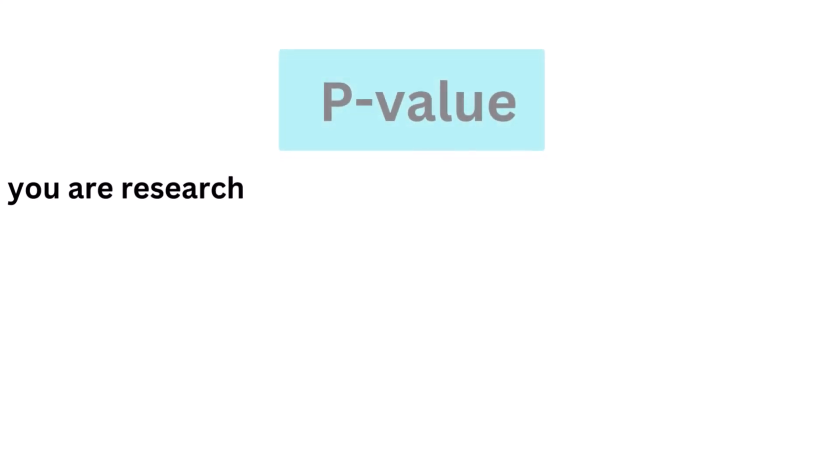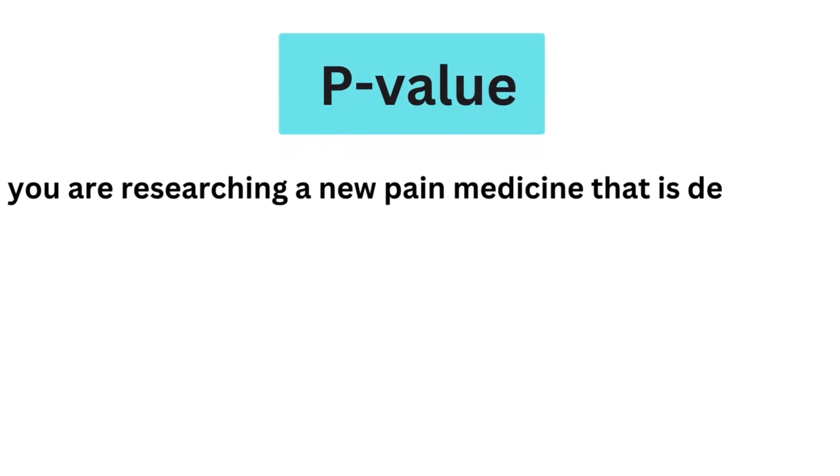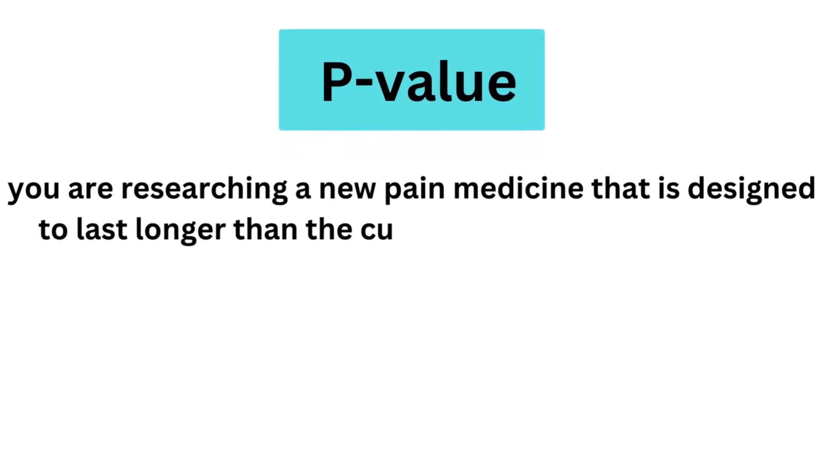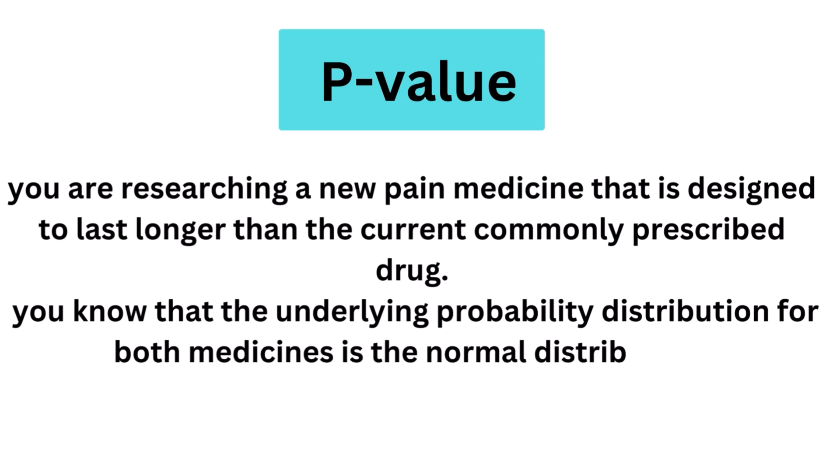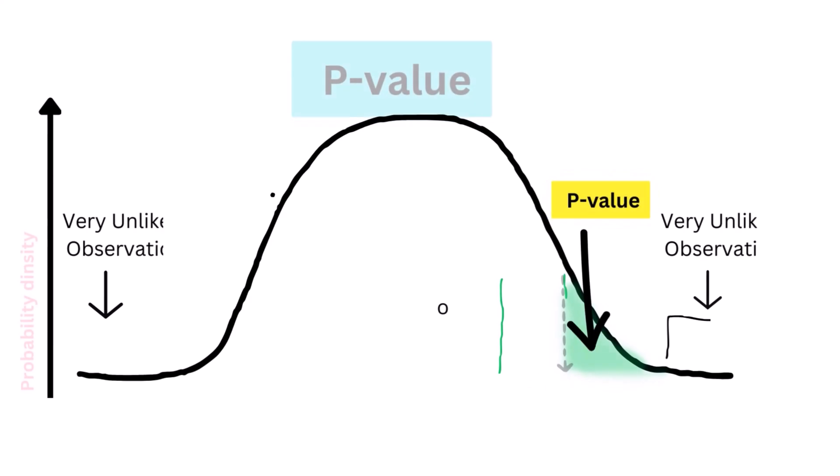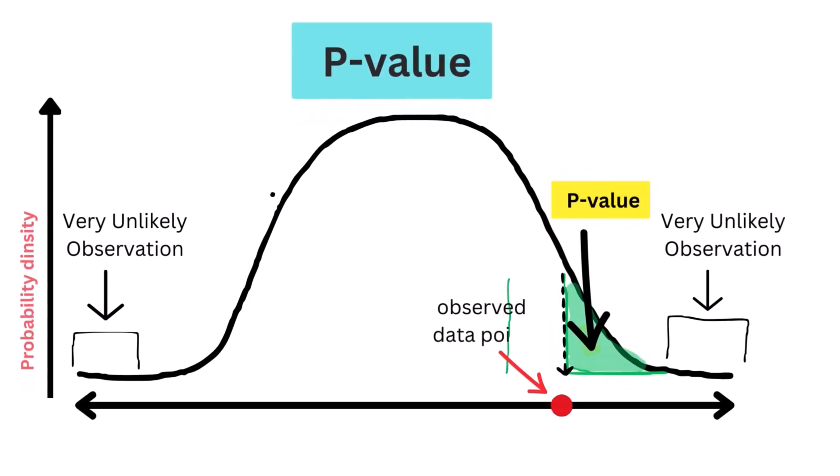For example, you are researching a new pain medicine that is designed to last longer than the current commonly prescribed drug. Intended only to demonstrate the concepts, you know that the underlying probability distribution for both medicines is the normal distribution. You are planning a clinical trial for your drug. If your results show that the average length of time patients are pain-free is longer for the new drug than that for the standard medicine, how will you know that this is not just a random outcome?